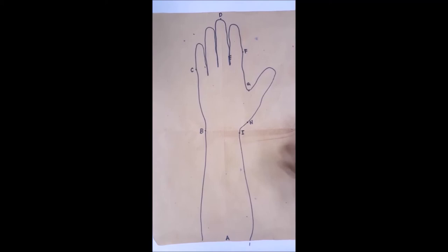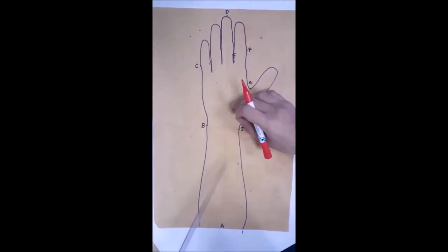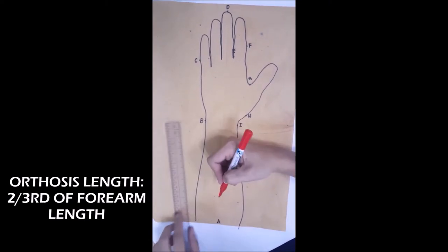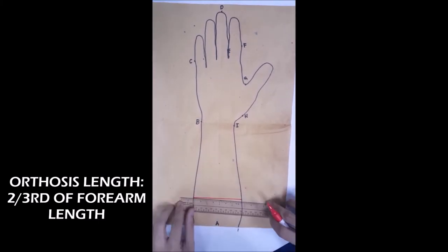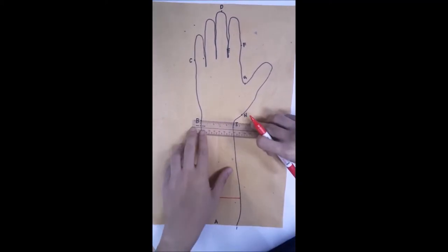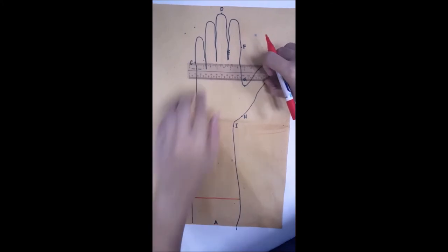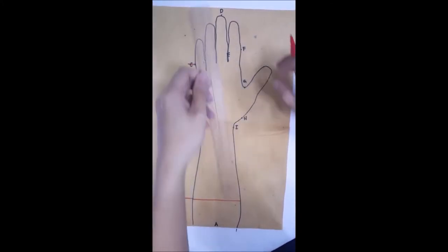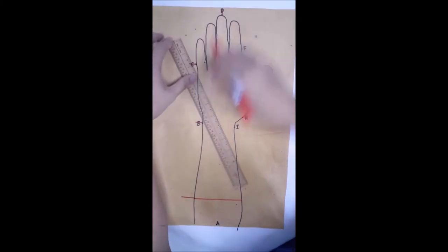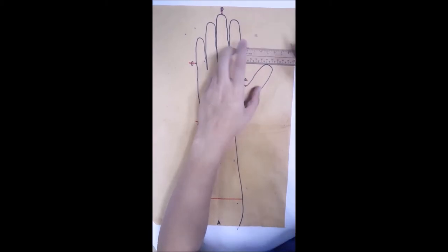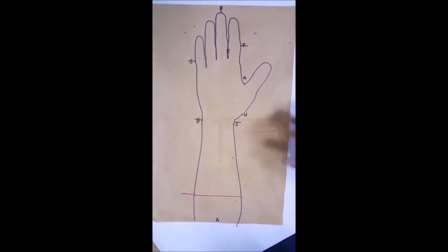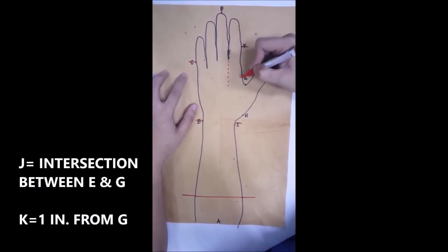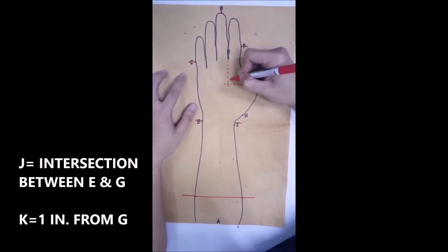And then draw a line across indicating two-thirds of the length of the forearm. You could use a ruler to measure this. Then extend a line from about one-half to one-inch beyond the landmarks. Then draw a dotted vertical line from the second webspace and dotted horizontal line from the first webspace, and mark the intersection as J.